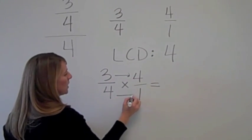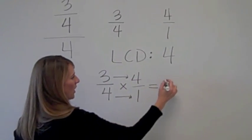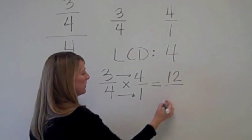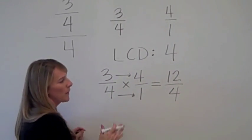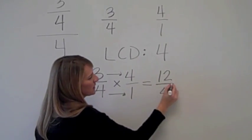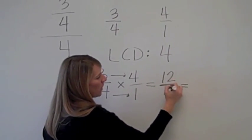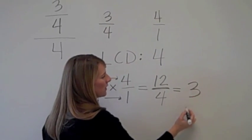Remember from Mr. Reardon's video, you multiply straight across. 3 times 4 is 12. 4 times 1 is 4. Always simplify. So remember this line means division. 12 divided by 4 is 3.